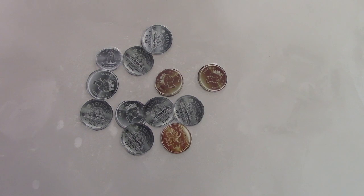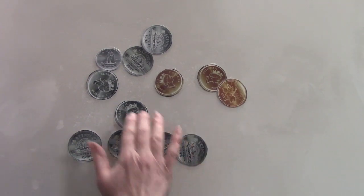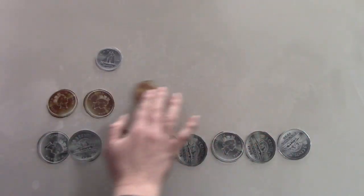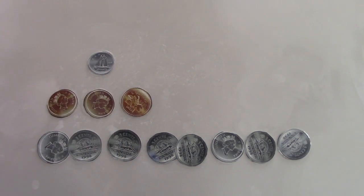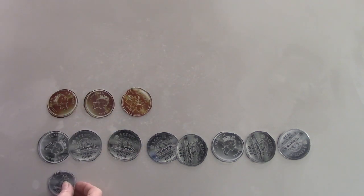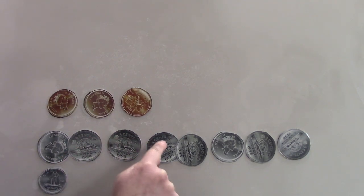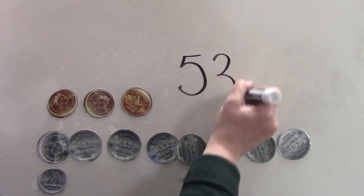I have some more coins here. Remember when we're counting coins, the first thing we do is we separate our coins into groups of coins that are the same. Oh, I tricked you this time. This one does not have a beaver on it. It does not say five cents. This one is 10 cents. And I'm going to put it here because we're going to start counting with that one because it is worth the most. 10, 15, 20, 25, 30, 35, 40, 45, 50, 51, 52, 53. We have 53 cents.